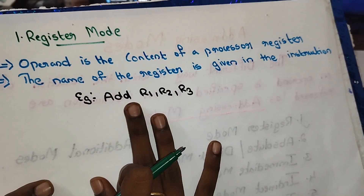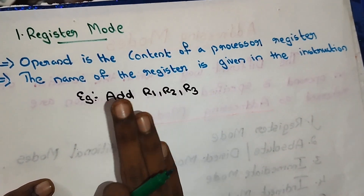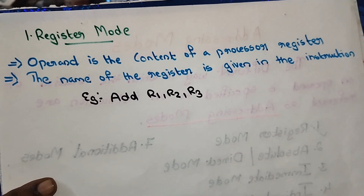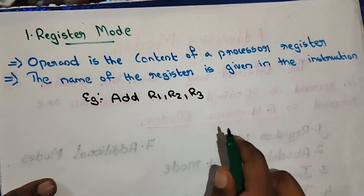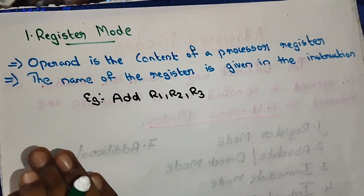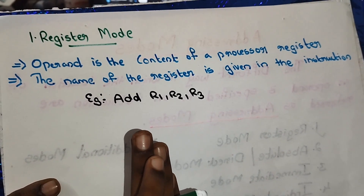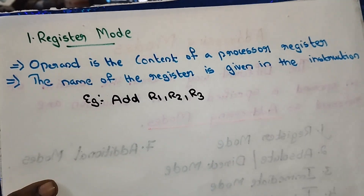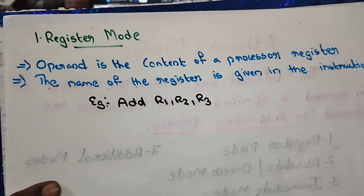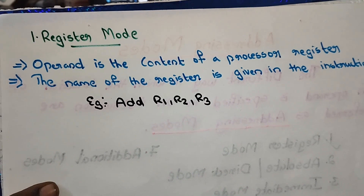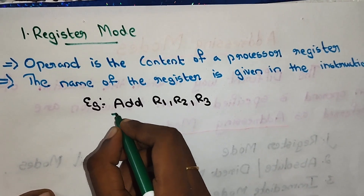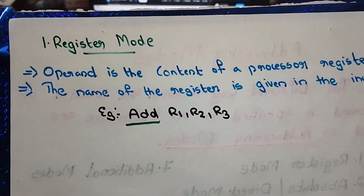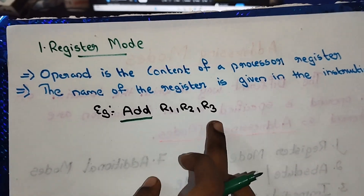Let's look at an example of register addressing mode. For example: ADD R1, R2, R3. Here, R1, R2, and R3 are all registers. This is an addition operation — the content of a processor register.